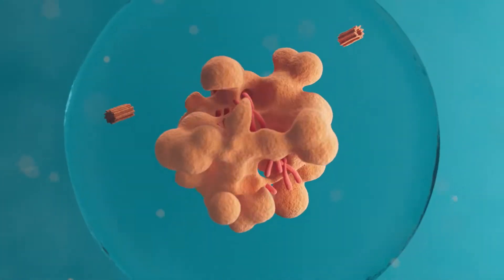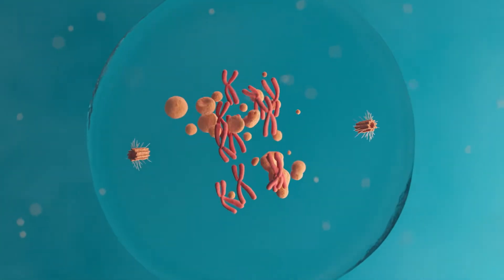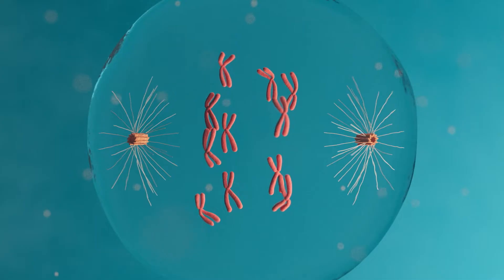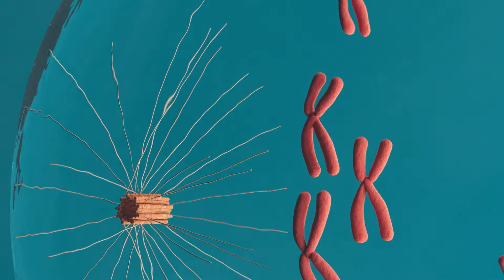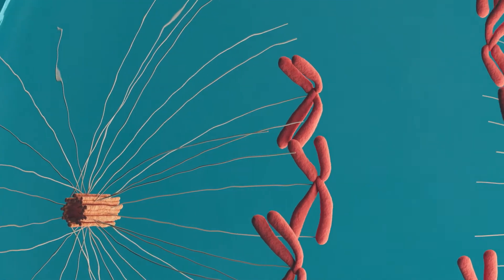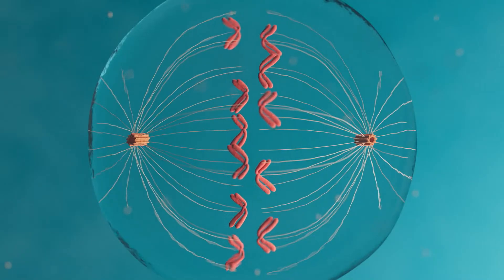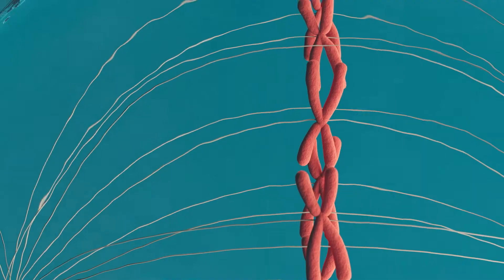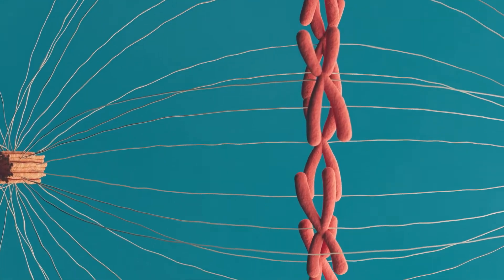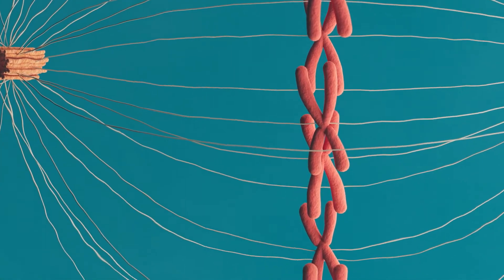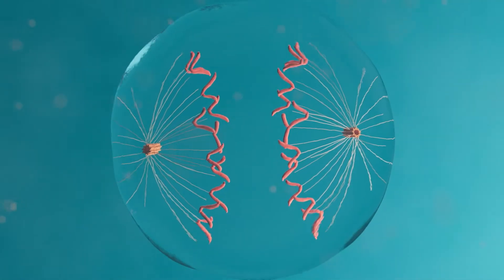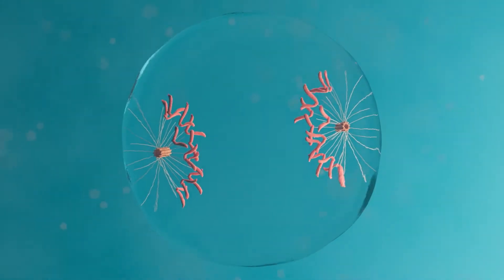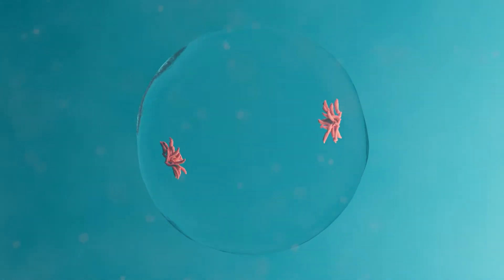Microtubules also play an important role in cell division. The chromosomes in the cell nucleus contain most of its genetic information. The microtubules first arrange the chromosomes along the equatorial plane and then draw them apart. This divides the genetic material in the cell nucleus into two equal halves. Hence microtubules play an extremely important role in the growth and reproduction of organisms.